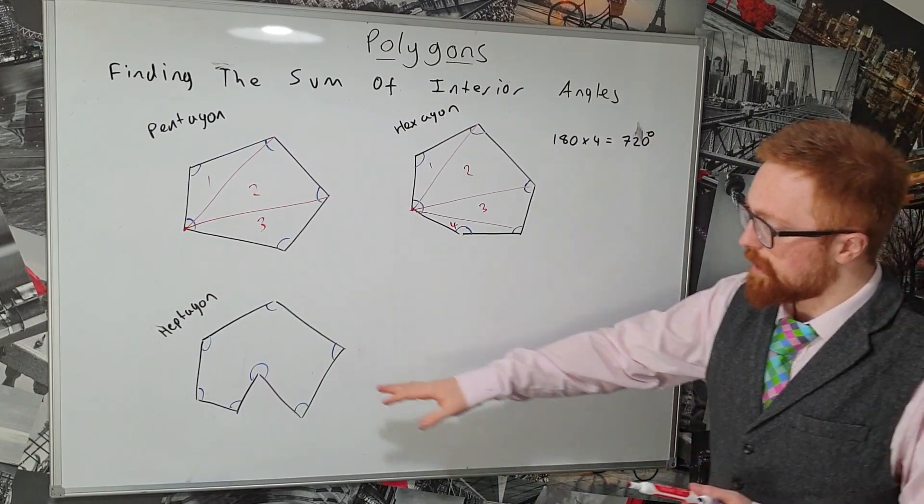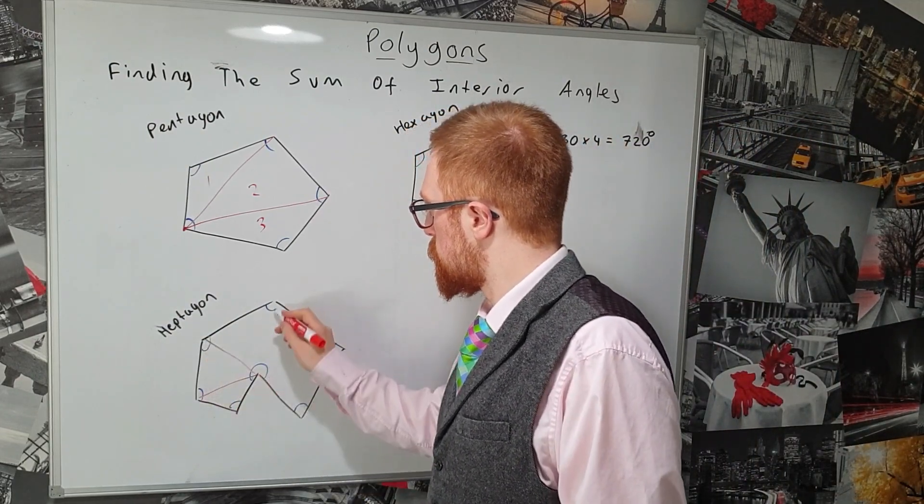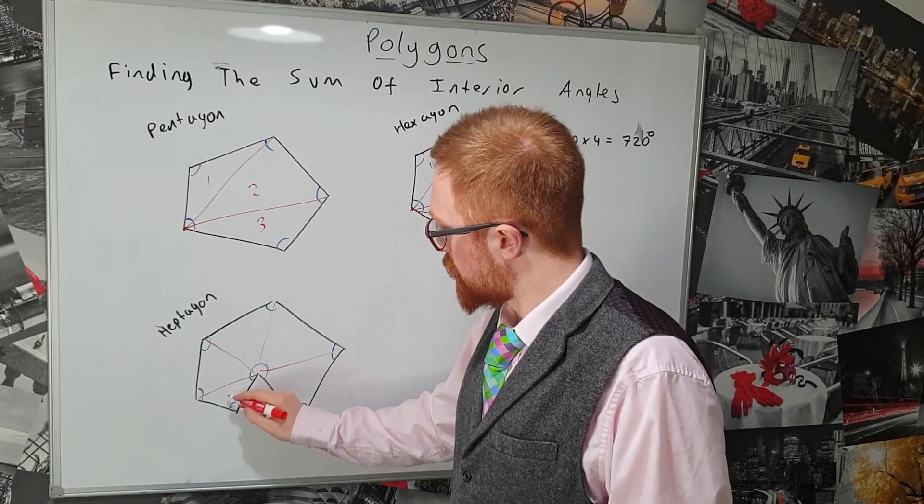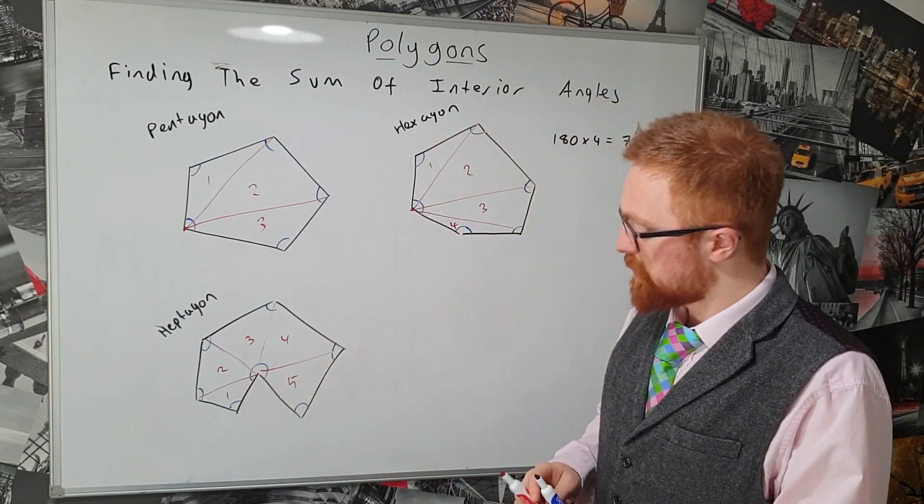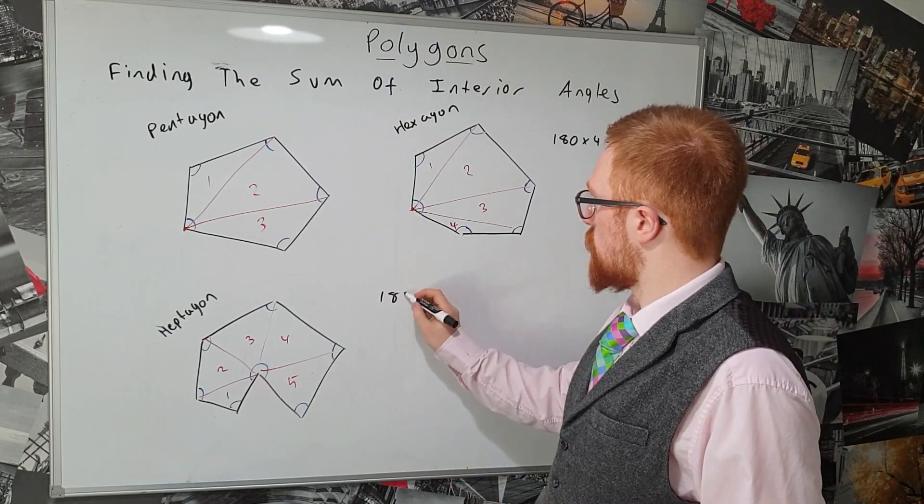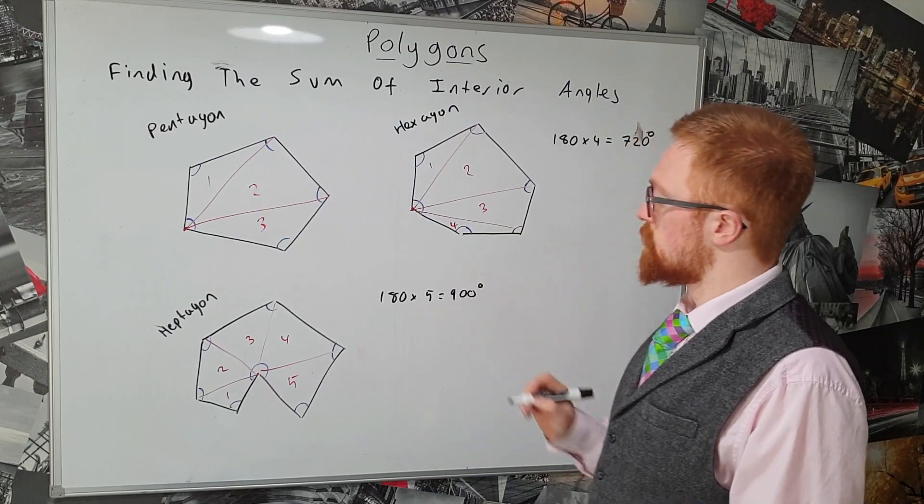Okay let's have a look at hexagon, exactly the same strategy. We'll start here this time. One, two, three. So that's split it into one, two, three, four, five triangles. So then we've got 180 times 5 which is equal to 900 degrees.